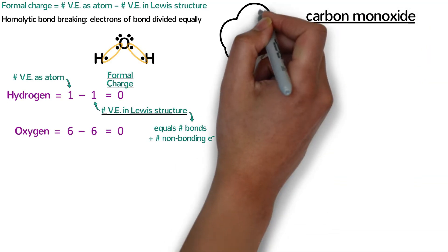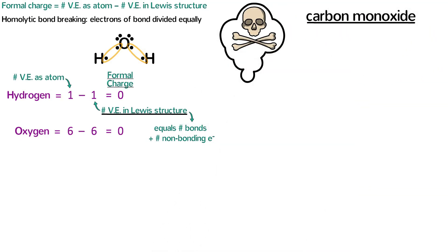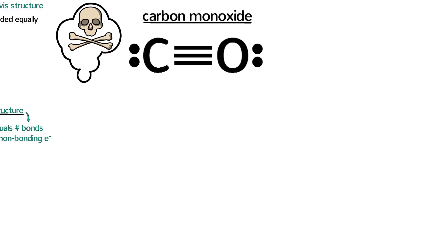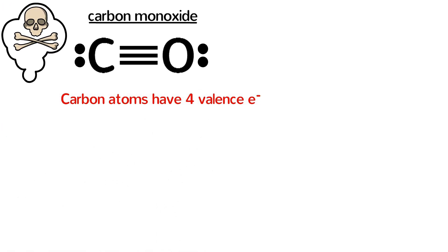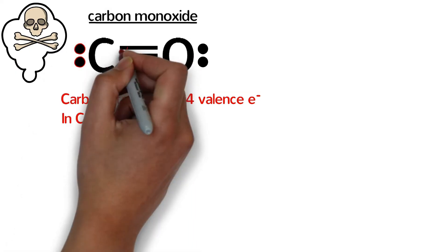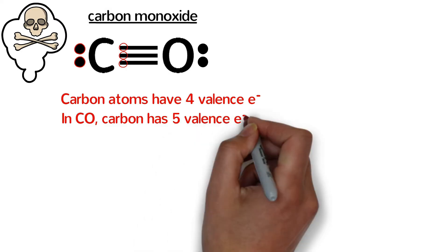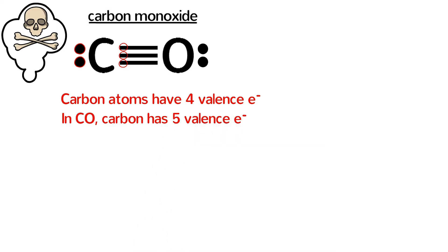Carbon monoxide is a colorless, odorless, highly toxic gas with the following structure. We know that single carbon atoms have four valence electrons, but in this Lewis structure of carbon monoxide, carbon has one, two, three, four, five valence electrons.